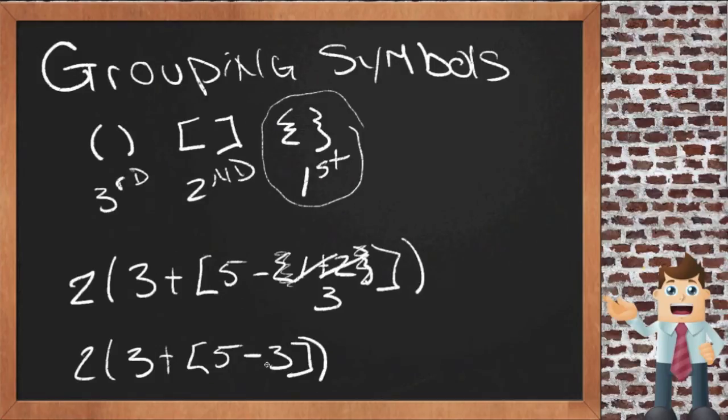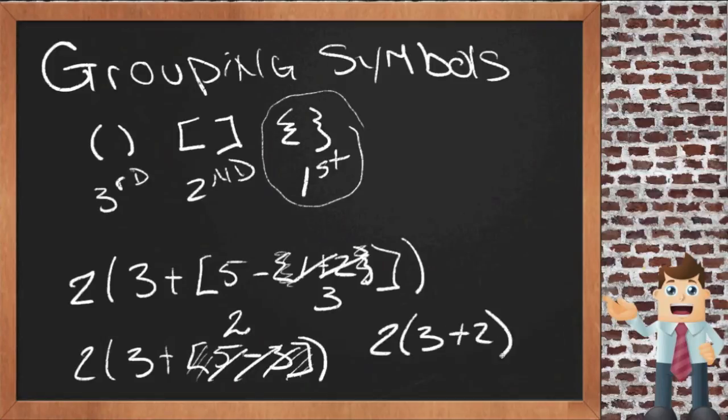So now we do the next set inside. Five minus three is two, so we'll replace that five minus three with a two. So now we have, we're getting rid of these brackets. We're done with these. So now we have two times three plus two. And we can do the three plus two. It's the only thing left inside parentheses. Three plus two is five. So we have two times five, and our answer is ten.